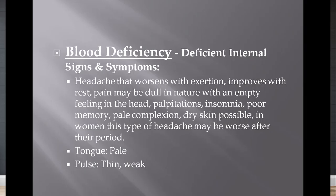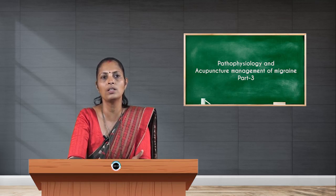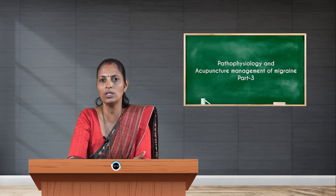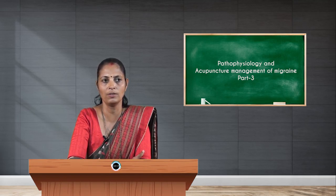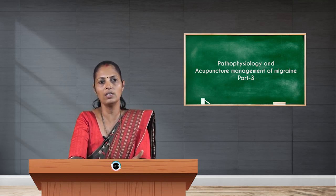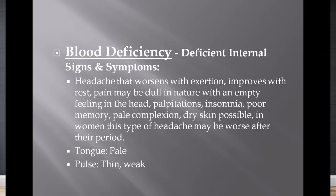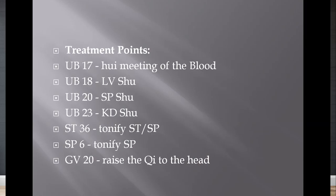Blood deficiency: headache worsens on exertion and improves with rest — that is the typical nature. Pain may be dull in nature with an empty feeling in the head. Palpitations, insomnia, poor memory, pale complexion, and dry skin are possible associated factors. In women, this type of headache may be worse after their menstrual cycle. The tongue may be pale due to blood deficiency; the pulse may be thin and weak.